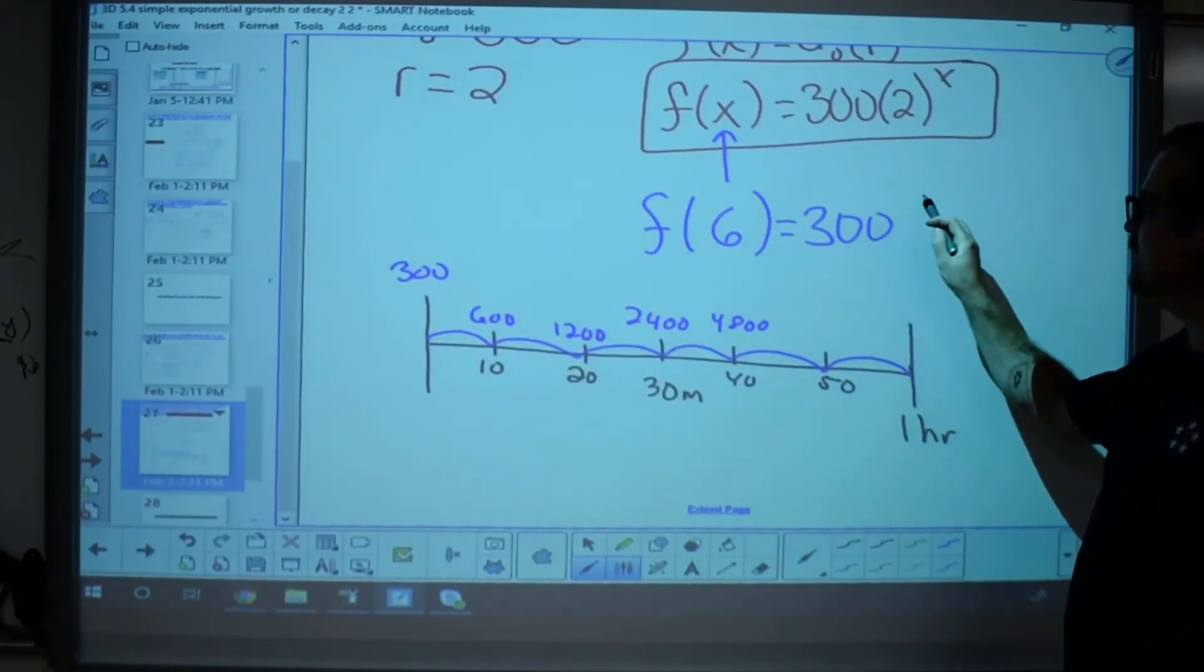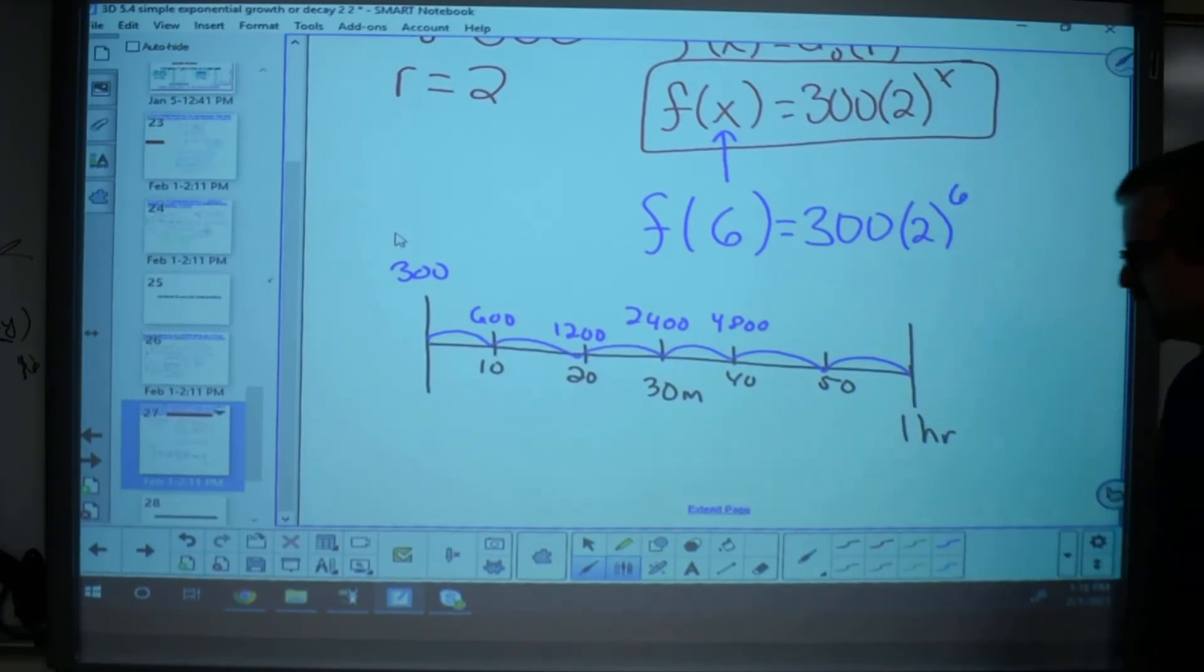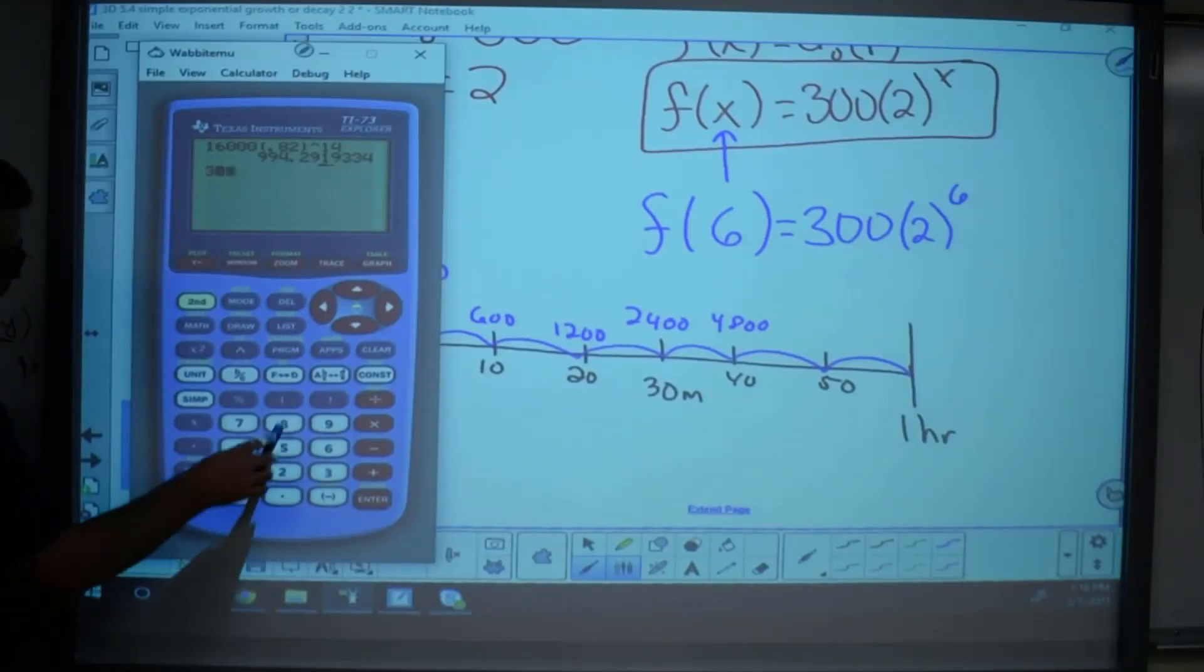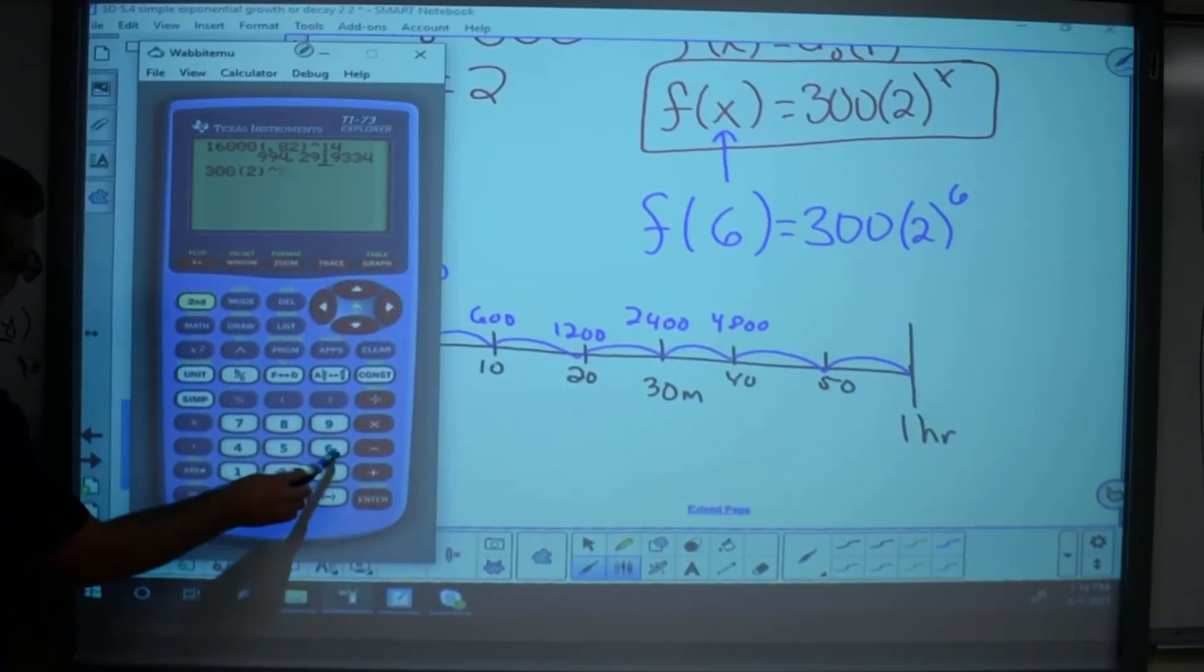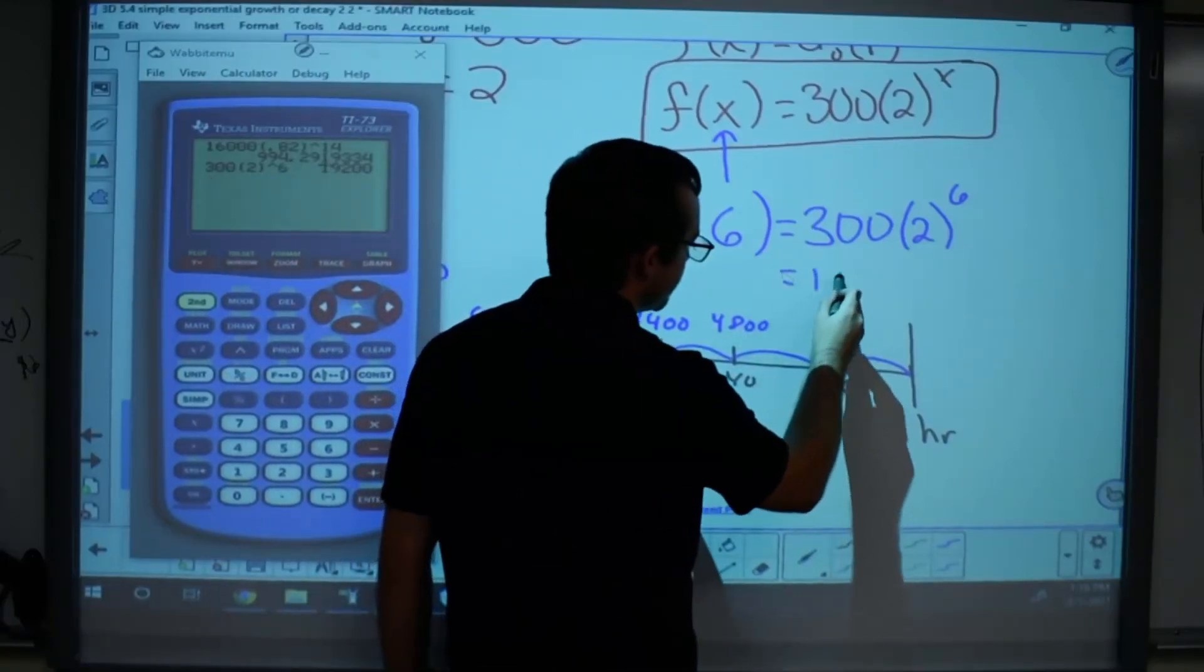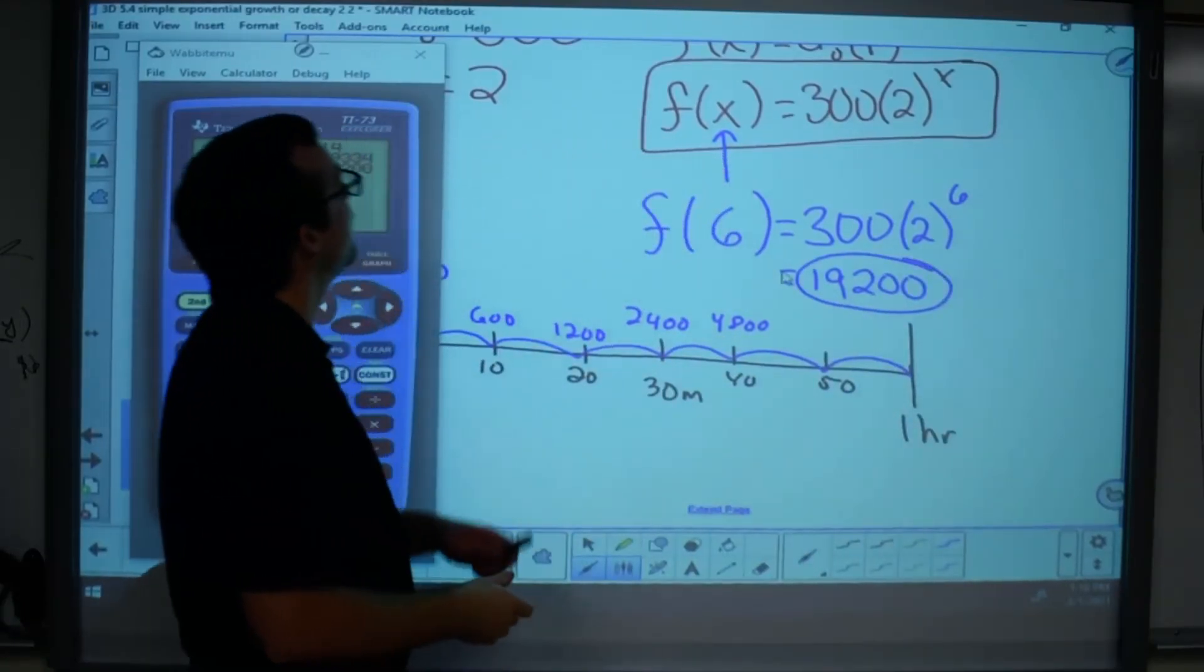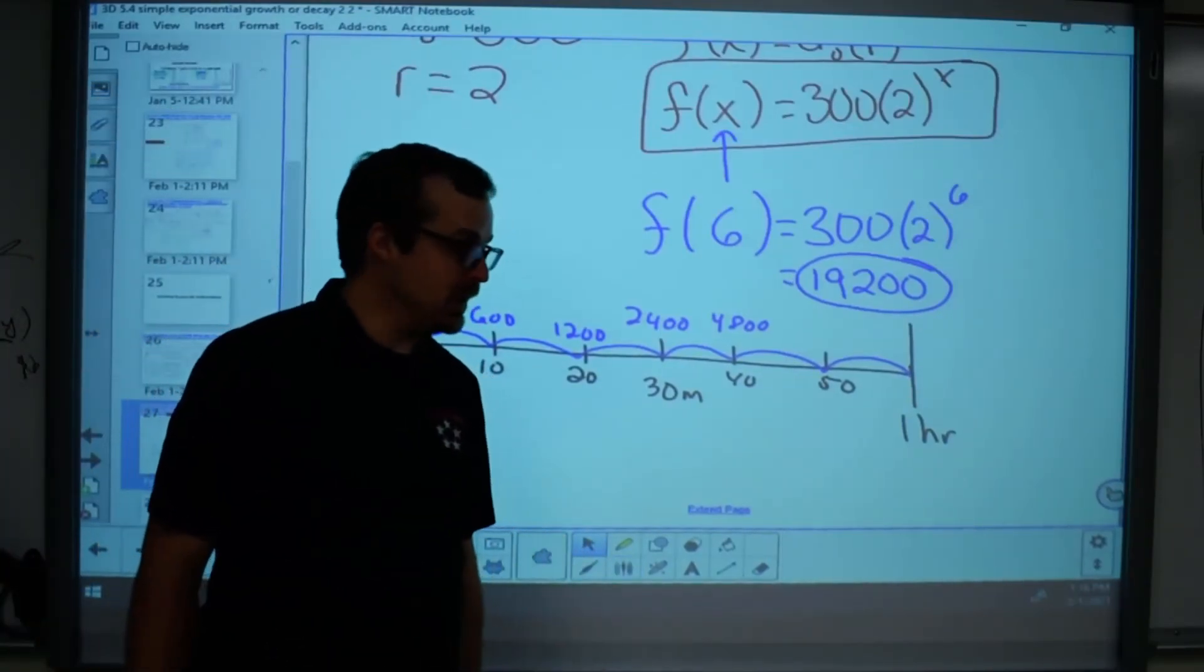So starting off with 300 bacteria, doubling, and it's going to double six times. That's the power of six. And we go and check this out on our calculator. 300 times two to the power of x. In this case, it's six. Bingo, bango. Wow, 19,200 bacteria just because I didn't wash my hands within an hour. Unfortunately, that just so happens to be pretty close to accurate.